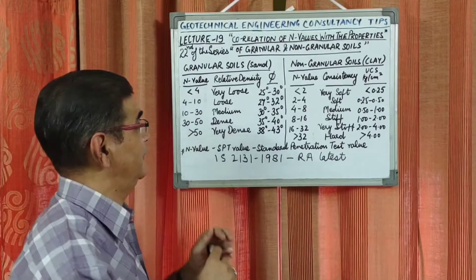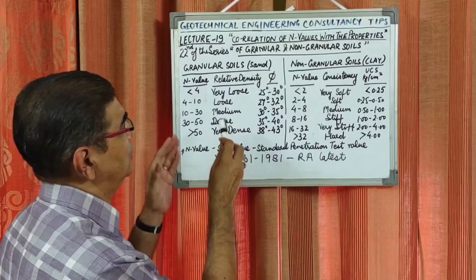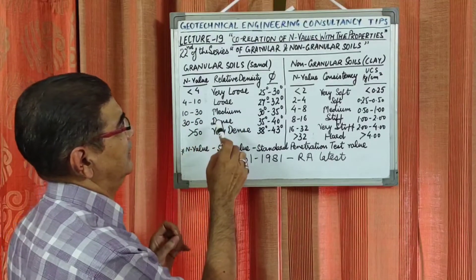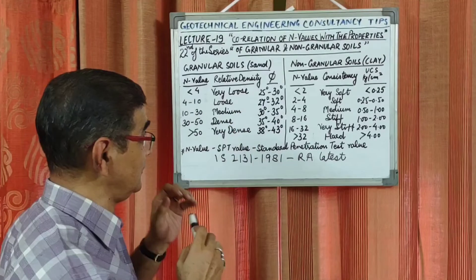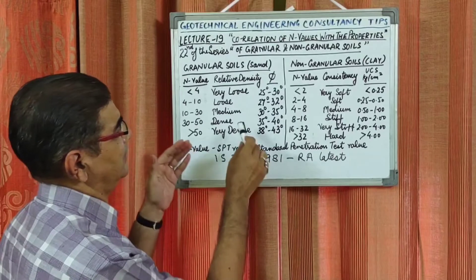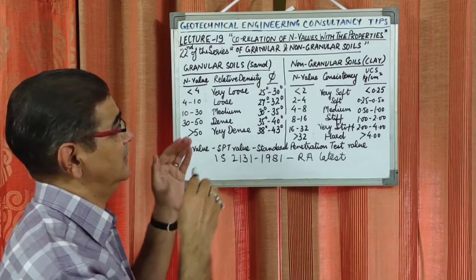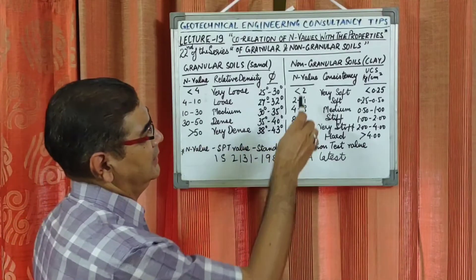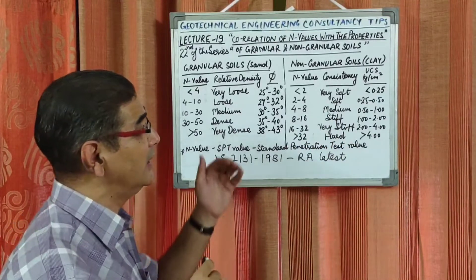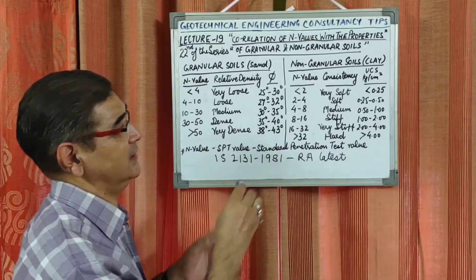This chart depicts how to describe sandy soil with reference to N-values using the term relative density. The SPT value gives a first impression of the angle of internal friction and the denseness of the sand. When the same N-values are obtained in cohesive soil — that is, clay strata — they refer to the UCS, which is the unconfined compressive strength, indicating the consistency of that clay.